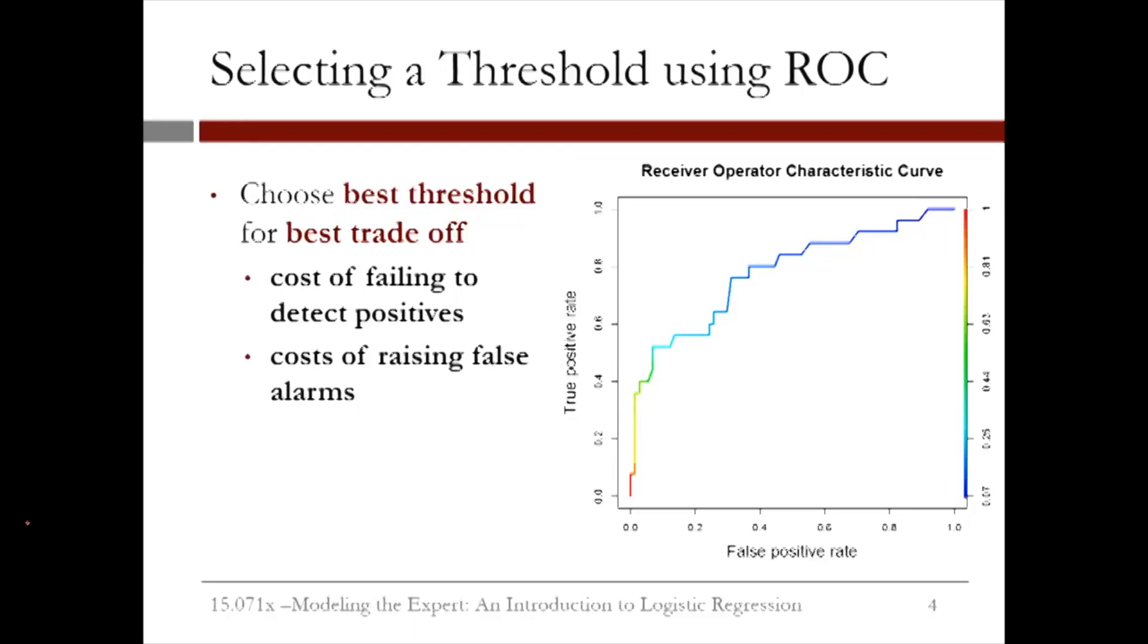You can label the threshold values in R by color coding the curve. The legend is shown on the right. This shows us that if we want to pick a threshold value around here, this corresponds to between the aqua color and the green color, or it looks like about a threshold of 0.3.